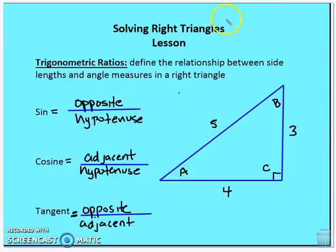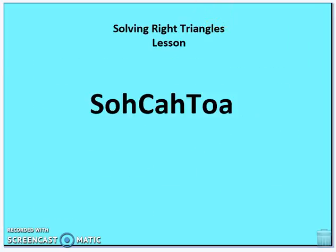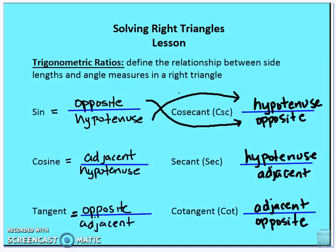To review our trig ratios: sine is opposite over hypotenuse, cosine is adjacent over hypotenuse, tangent is opposite over adjacent. Remember SOHCAHTOA — sine: opposite over hypotenuse; cosine: adjacent over hypotenuse; tangent: opposite over adjacent.